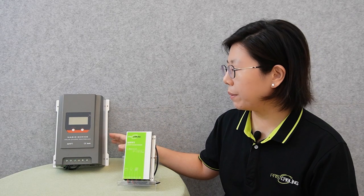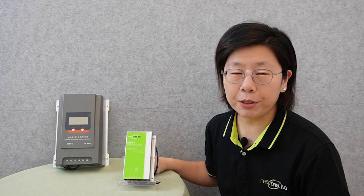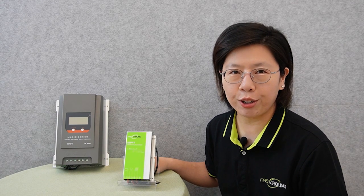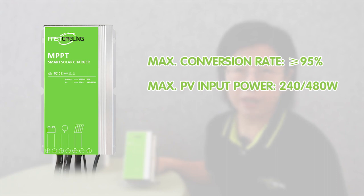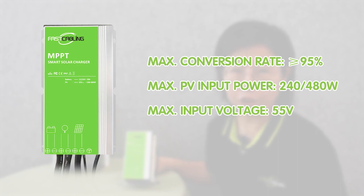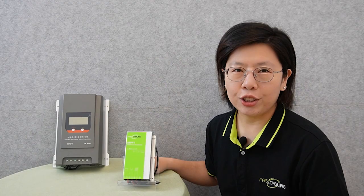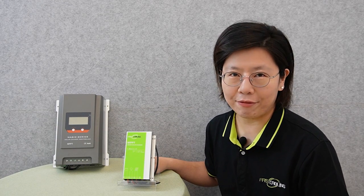Here we have two MPPT solar charge controllers. This small one is the 2A MPPT solar charge controller. It contributes to 15 to 20% higher efficiency than the PWM controller, with a maximum conversion rate of no less than 95%. It also supports a maximum PV input power of 240 or 480 watts, a maximum input voltage of 55V, accepts 12 or 24V battery voltage, and utilizes a heat sink to maximize heat dissipation and charging efficiency.